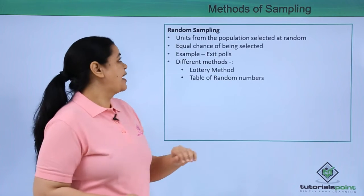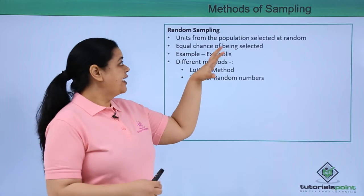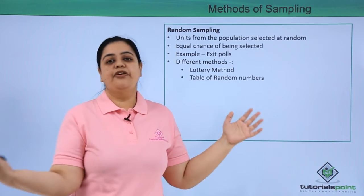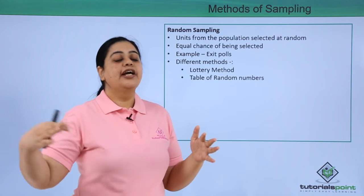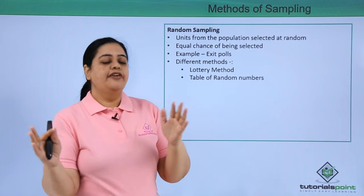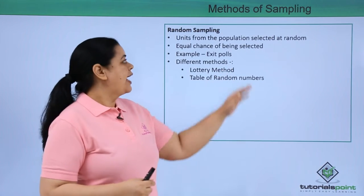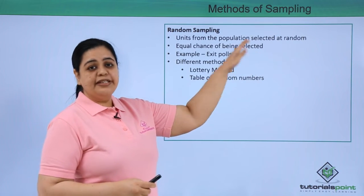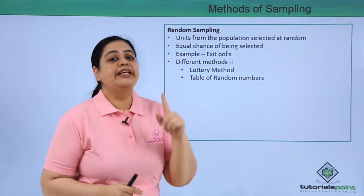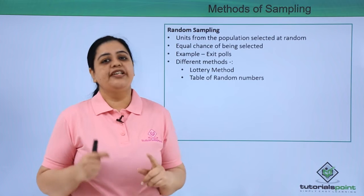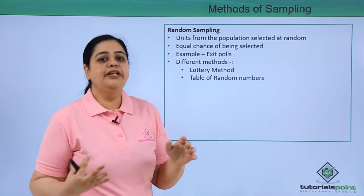Let us quickly understand the methods of sampling. The first method is random sampling, where I randomly collect data from the population — whoever is chosen as part of the sample is selected on a random basis. For example, to find out car preferences in Mumbai, I would randomly select people from the population. Every person in the population has an equal chance of getting selected. The best example to remember for random sampling is exit polls conducted during elections.